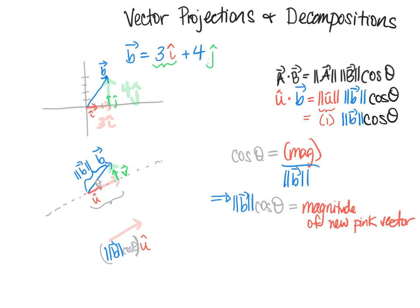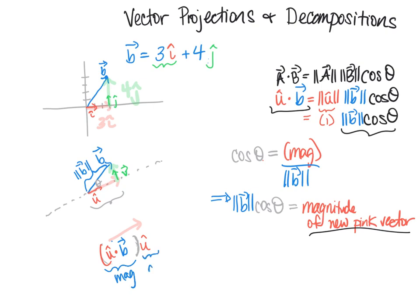Notice what we just found: the magnitude of the pink vector is actually just the dot product û · b. So we can replace that over here — we don't have to know the angle because we can use what we know about the dot product. The pink vector is (û · b) times û, where û · b gives the magnitude and û gives the direction.